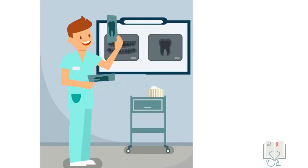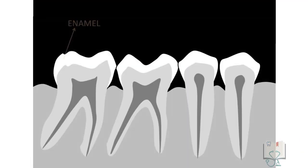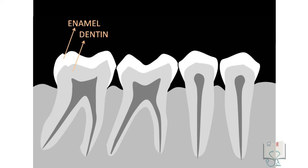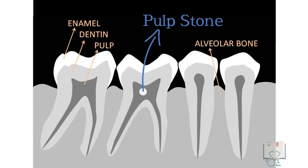Diagnosis: Pulp stones are diagnosed by radiographic investigations. In a dental radiograph, all the calcified structures—that is enamel, dentine, and bone—appear radiopaque; only the pulp appears radiolucent. Pulp stone appears as a radiopacity in the pulp chamber as it is also a calcified structure.